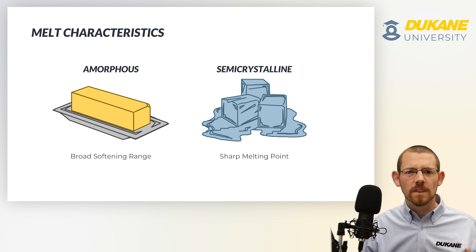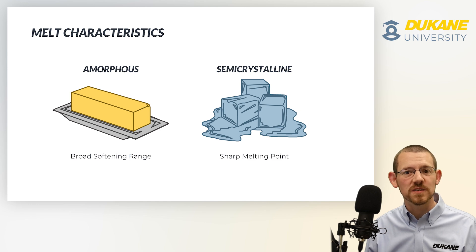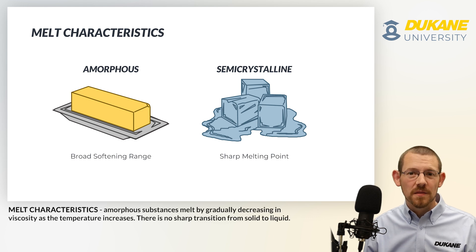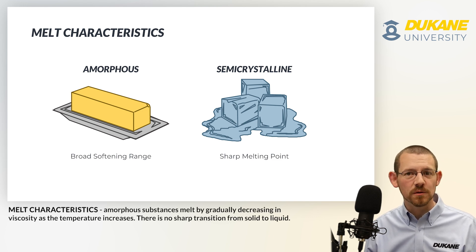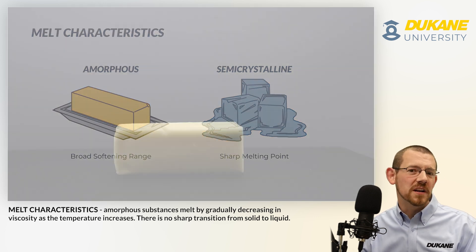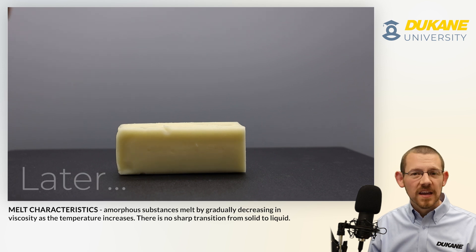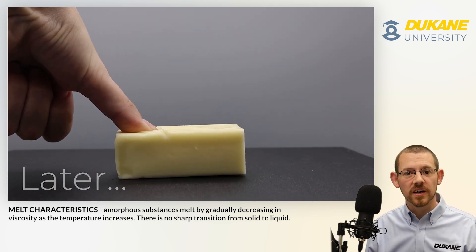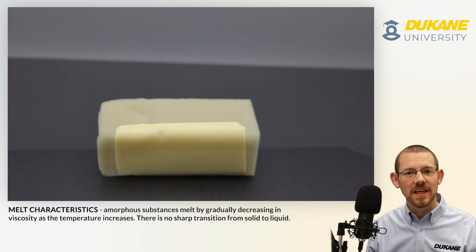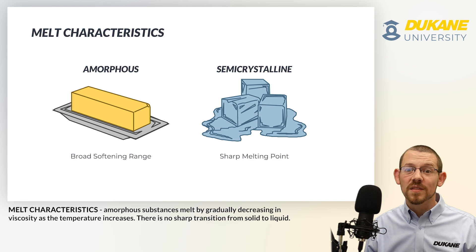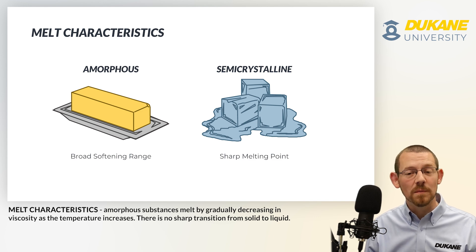That difference in molecular structure and how those chains bond informs their melt characteristics. Amorphous resins act kind of like butter — they have a broad softening range, but not a sharp temperature at which they transition to a liquid. If you put a stick of butter on a table when it's cold and press it with your finger, it would not deform. At room temperature, you'd leave a finger imprint, but you wouldn't describe it as a liquid. It's still a solid, but it has a memory of that deformation.